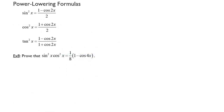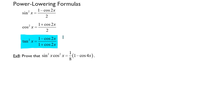Now let's look at the power lowering formulas. We have sine squared of x equal to 1 minus cosine of 2x over 2. Cosine squared of x equals 1 plus cosine of 2x over 2. And tangent squared of x equals 1 minus cosine of 2x over 1 plus cosine of 2x. We were able to show this last one as an identity using the different information and formulas we know so far, so you could imagine we could show the other two as well.